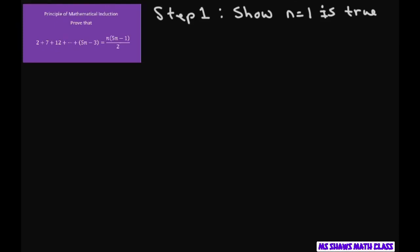All right, so basically we're just going to plug in 1 in both of those, and you should get the first term, which is 2. So we have 5 times 1 minus 3 should equal 1 times 5 times 1 minus 1 divided by 2. So this is 2. So this is 2 equals 4 divided by 2, which equals 2. So that works.